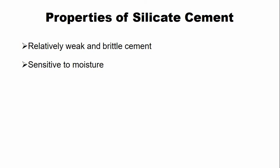The cement is sensitive to moisture, so it is important to protect the material from moisture during initial setting. The cement is also highly acidic in nature during setting; therefore it is important to give a lining just below the silicate restoration in order to protect the vitality of the dental pulp.